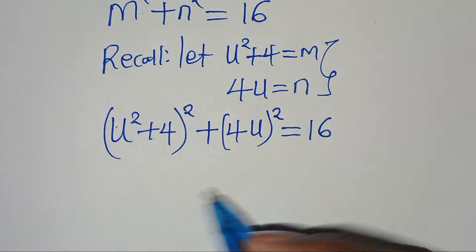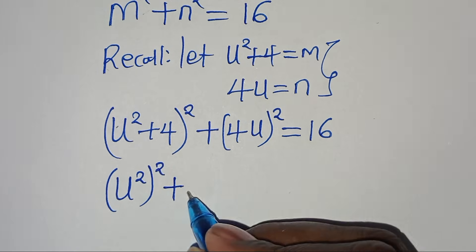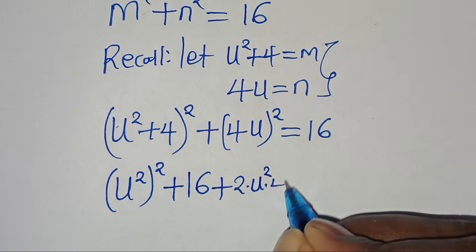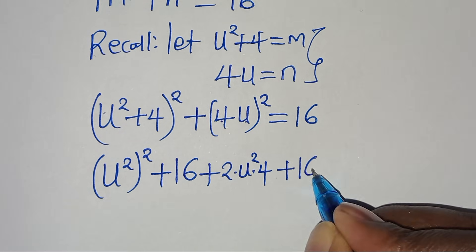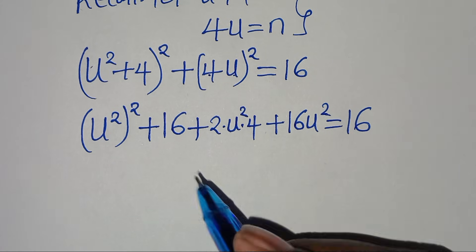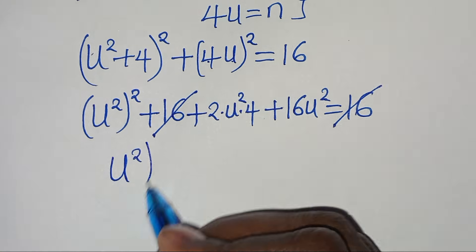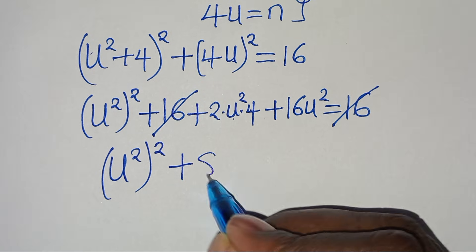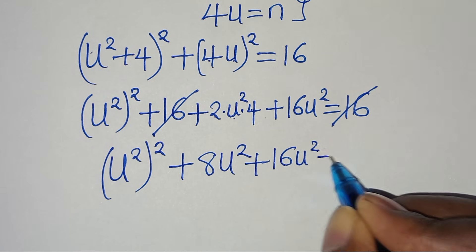Expanding this: (u²)² + 4² + 2 times u² times 4 plus (4u)² equals 16. This gives u⁴ + 16 + 8u² plus 16u² equals 16. So u⁴ + 8u² + 16u² + 16 equals 16, meaning u⁴ + 24u² equals 0.